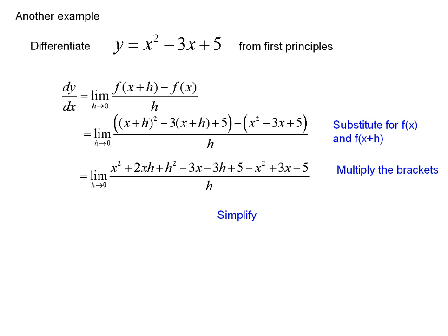Next step is simplify. The 5 and minus 5 cancel out. x squared and minus x squared cancel, minus 3x plus 3x also cancels out, leaving you with that. You can see there's an h, an h squared, and an h, so now we can divide by h.